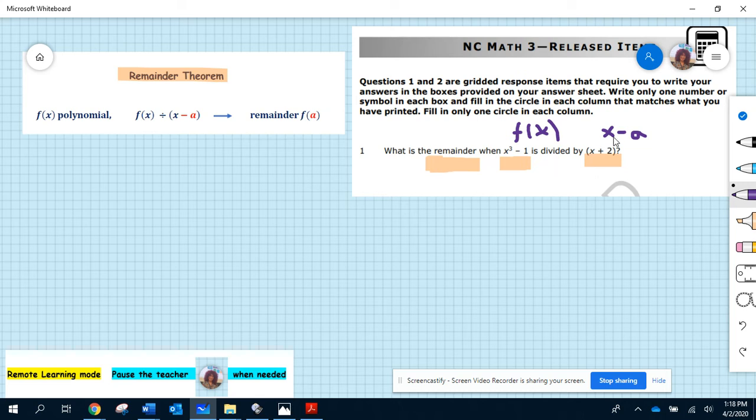For us, minus a is like 2. That means that a should be negative 2. You just flip the sign. What you should do, according to the theorem, is calculate f of a.